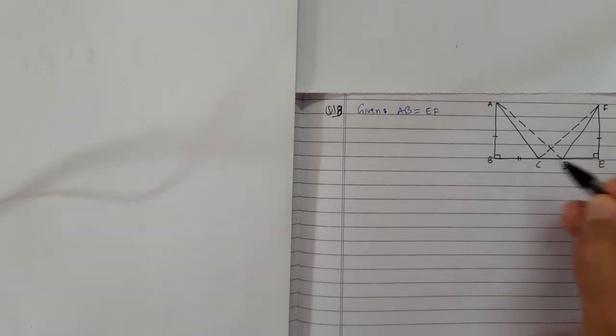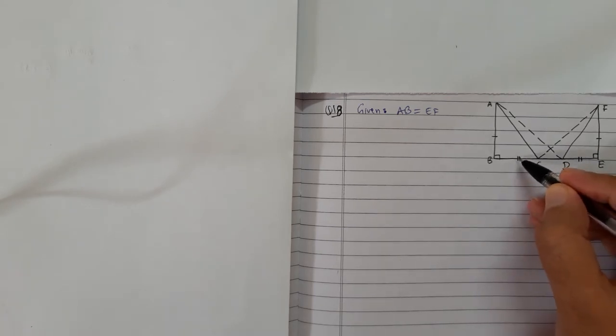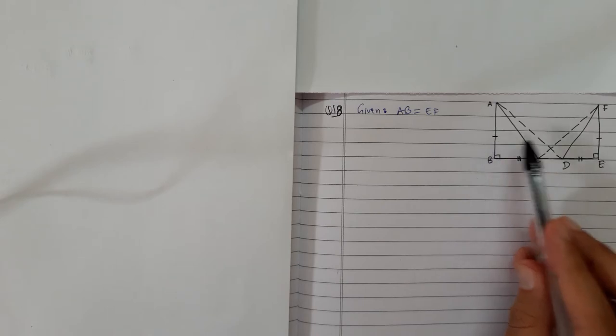Second thing is BC equals DE. I'm marking it by two lines because this is not equal to this. Just looking at the figure, I can figure out that this part is equal to this part and this part is equal to this part.